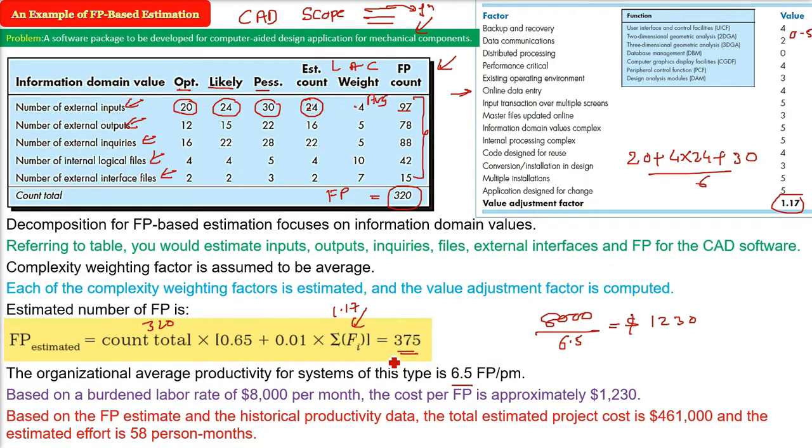Now we have already known the FP estimated. The total estimated project cost will be what? This is 375 and just multiply it with your 1230. So you will get $461,000. So $461,000, this will be the cost, total estimated project cost.